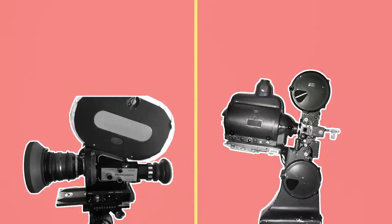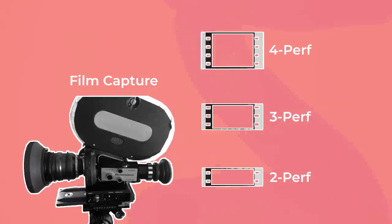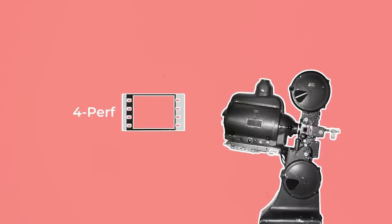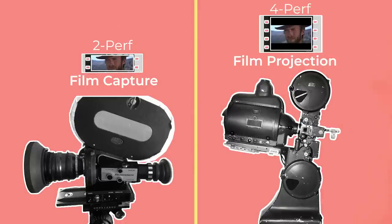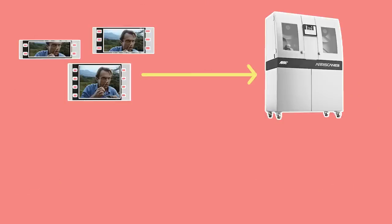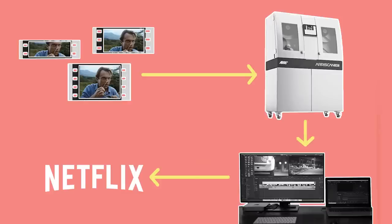There are two different steps to the filmmaking pipeline: capturing images on film with a camera, and projecting those images on film by passing light through them. Image capture can happen on either 4, 3, or 2 perf. However, 35mm film projectors are said to work with a 4 perf film print, meaning that if you capture film in 2 or 3 perf, you would still need to print the final 35mm projection roll in 4 perf frames. Now that digital projection has taken over, it's possible to capture in either 2, 3, or 4 perf, scan the film negative, and work with it as a digital file for cinemas or online streaming.